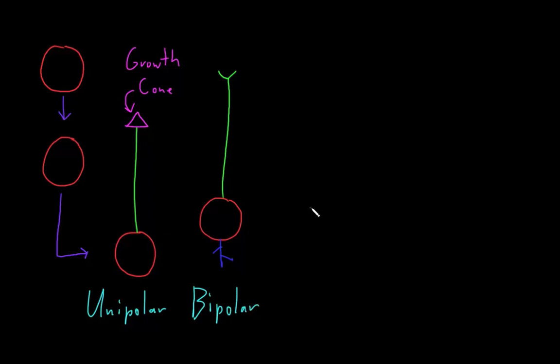The next structural type of neuron has a soma, just like the others, and one axon, but it has multiple dendrites. And so since it's going to have multiple poles, it's called a multipolar neuron. And this is the most common structural type of neuron in adult humans.